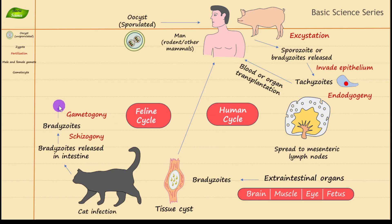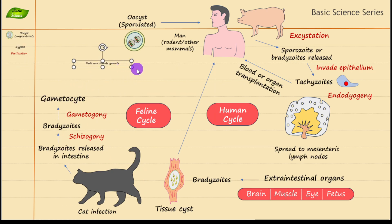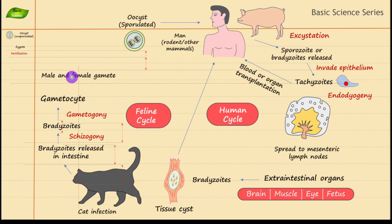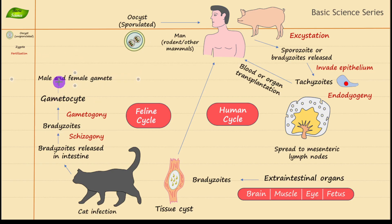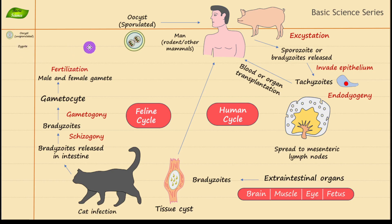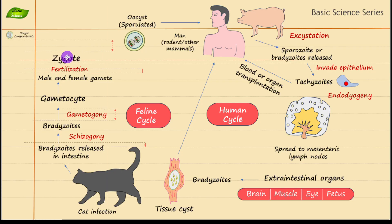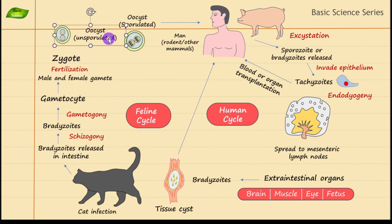In gametogony, male and female gametocytes are produced, because for sexual reproduction you need both. From the gametocytes, male and female gametes are formed — these are two different things, do not get confused. Male and female gametes then undergo fertilization, which causes the formation of a zygote.